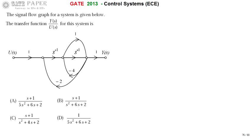We are discussing the GATE 2013 ECE paper. Look at the signal flow graph given for a system — find the transfer function from that and choose the right option. The transfer function from a signal flow graph can be calculated using Mason's Gain Formula.